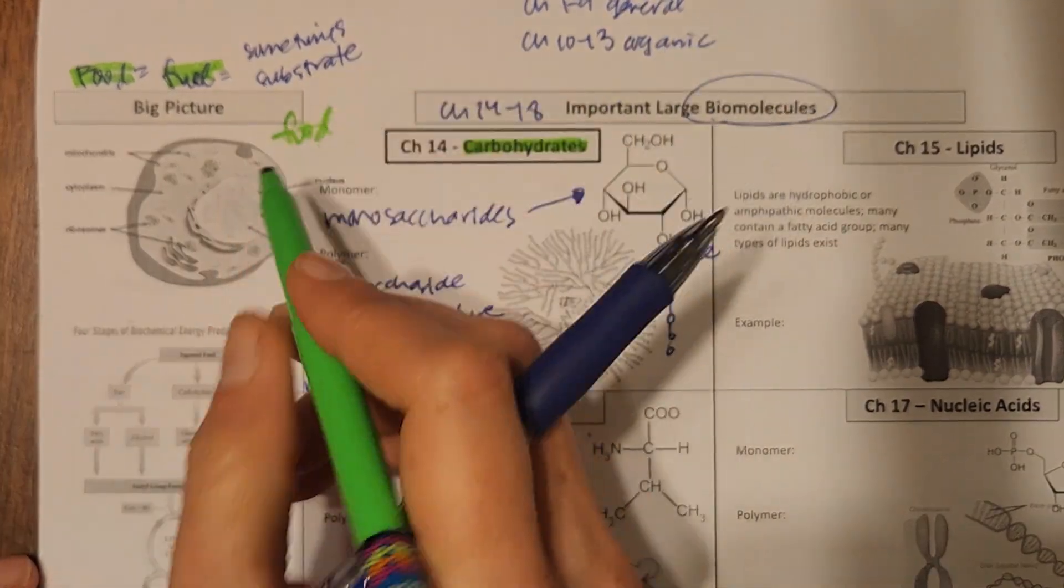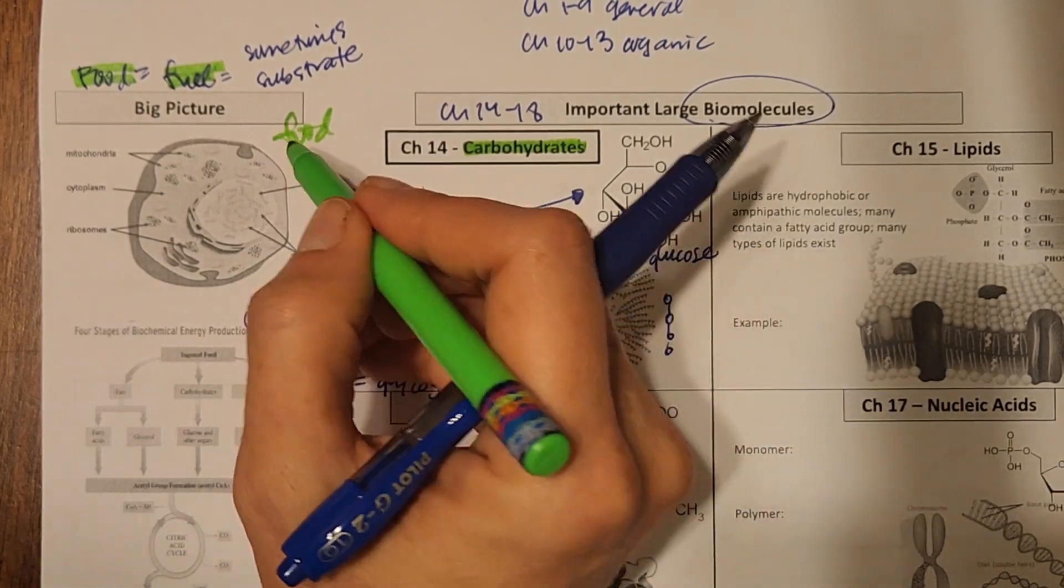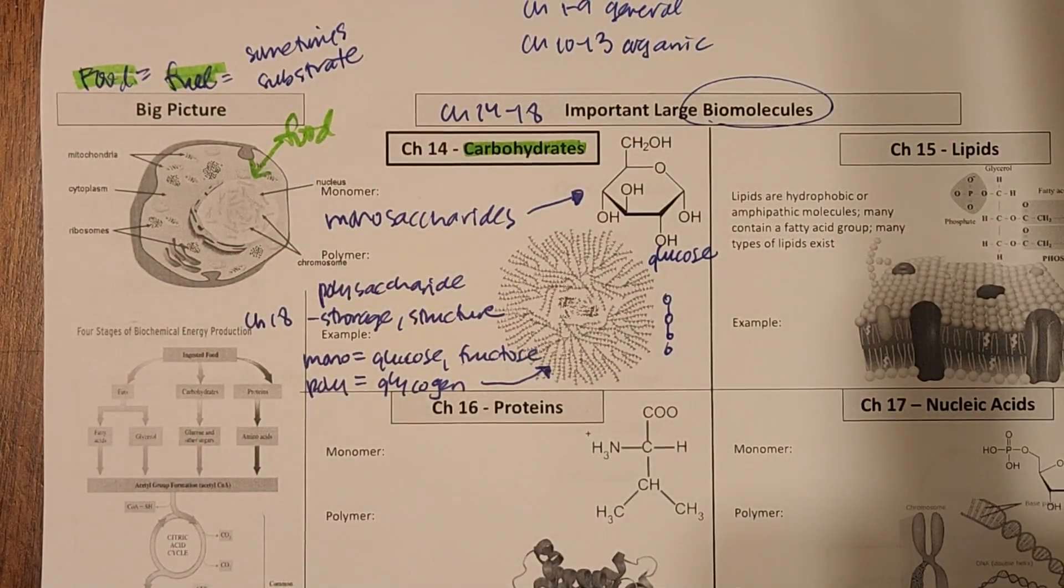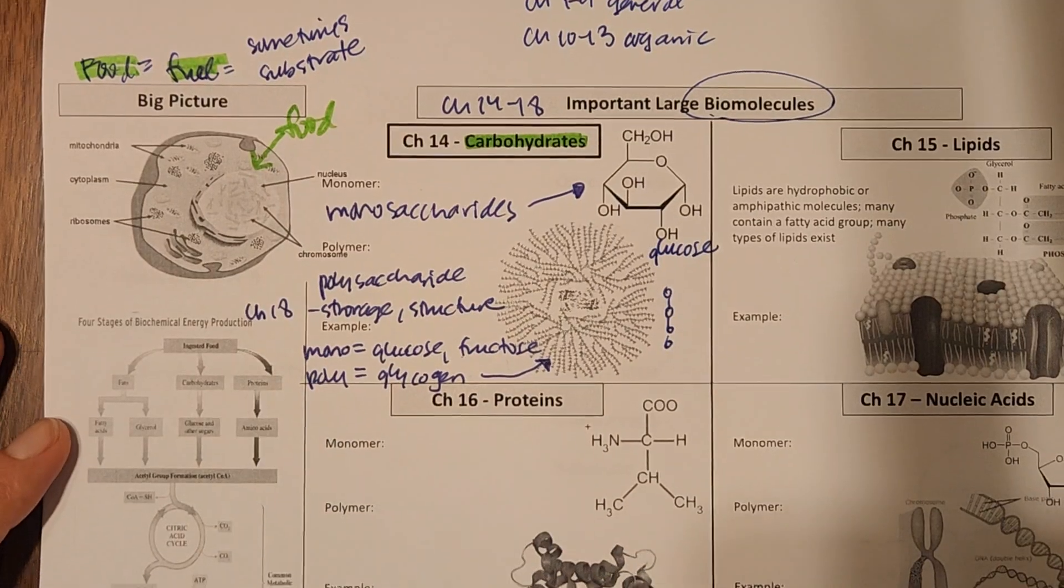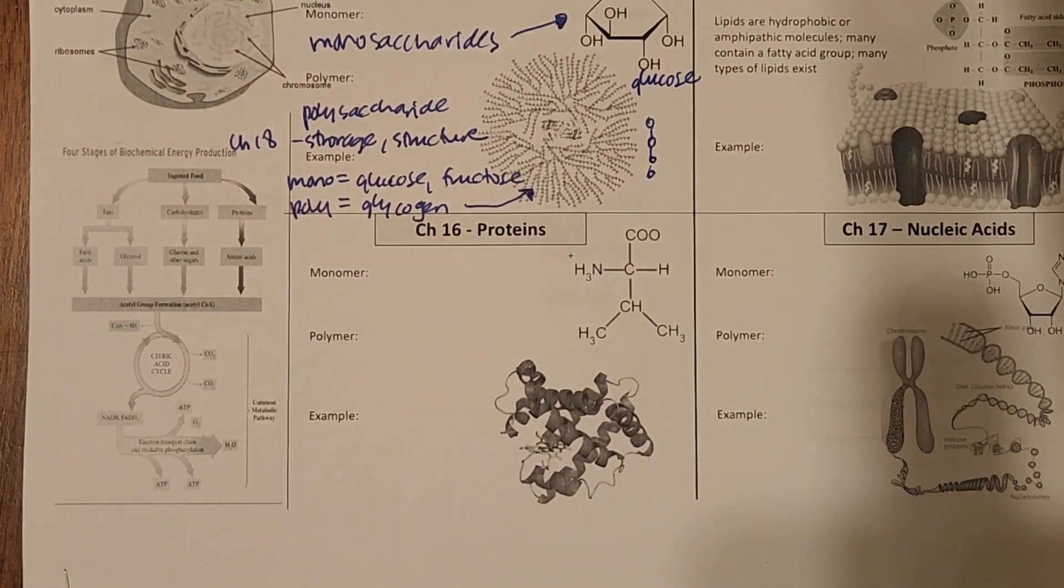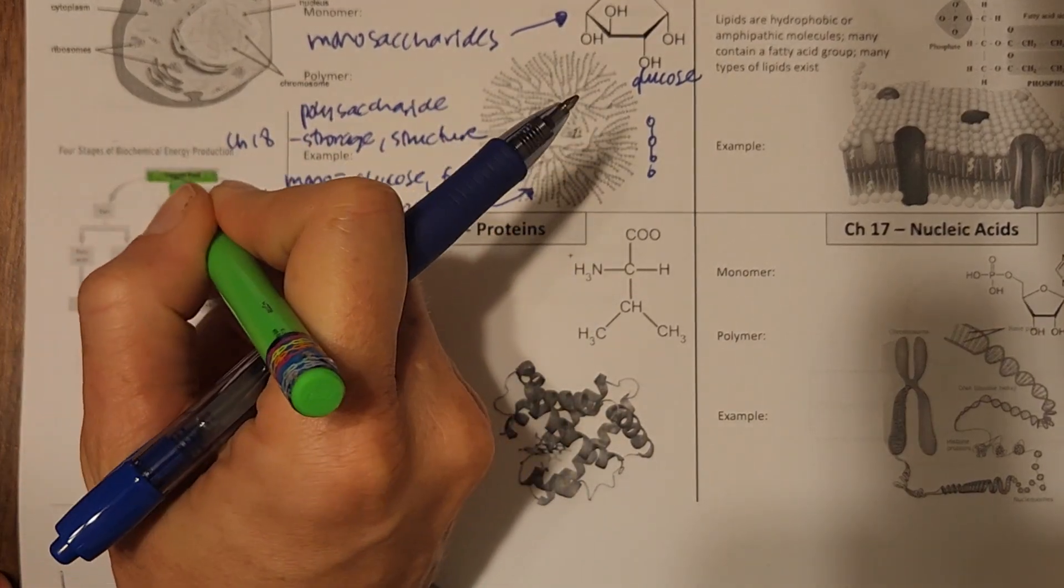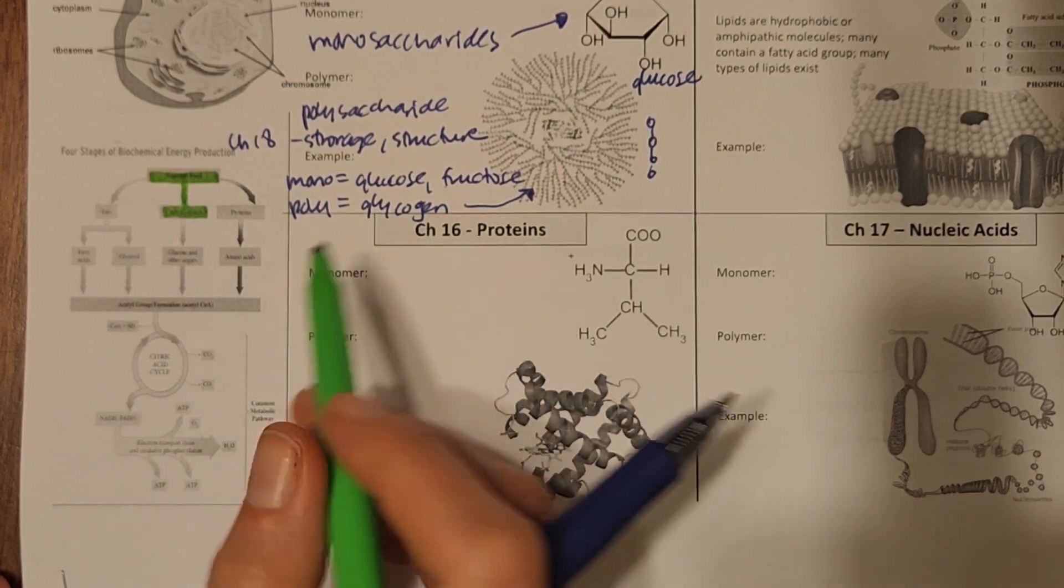So in the cell, we are going to have our food or fuel, our carbohydrates come into the cell. So this is a cell, we're going to eat, food is in our digestive system, and then eventually it goes into the cell. If we look at that in terms of this metabolic pathway here, here is our ingested food at the top. And we're going to focus on the carbohydrate pathway in this chapter.